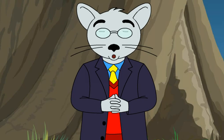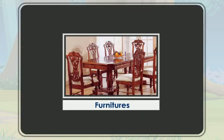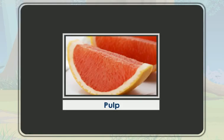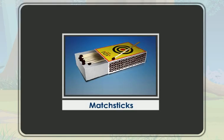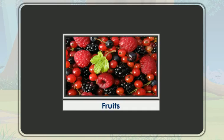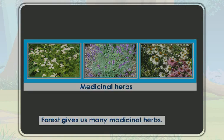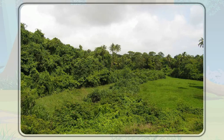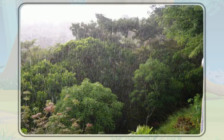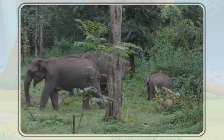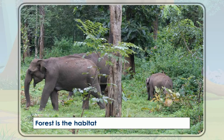So, forest resources provide us with many things. The forest gives us fertilizers, paper, pulp, clothes, matchsticks, fibers, fruits, and so on. Forest gives us many medicinal herbs. Forest is the habitat of many plants and animals. Forests also provide us timber.